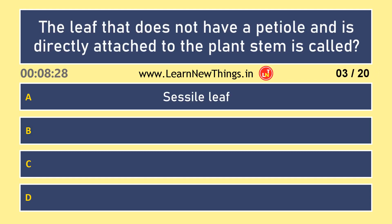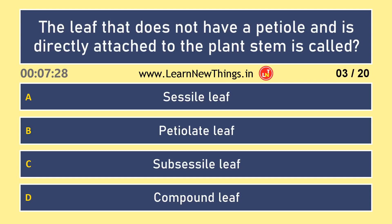The leaf that does not have a petiole and is directly attached to the plant stem is called a sessile leaf.